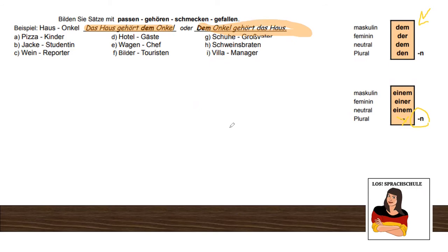I told you last week that you can switch around the position of the nouns — you'll learn later what sounds more natural and how to emphasize. The sentence means: the house belongs to the uncle. The task wants you to put in verbs that require a dative object: passen (to fit), gehören (to belong), schmecken (to be tasty to somebody), gefallen (to be liked by somebody). Try this exercise, take your time, and we'll compare in a little bit.